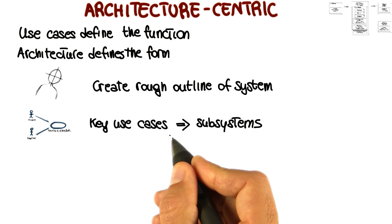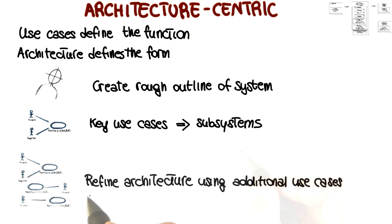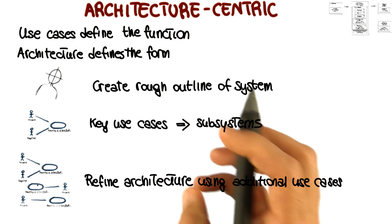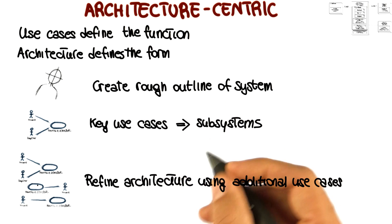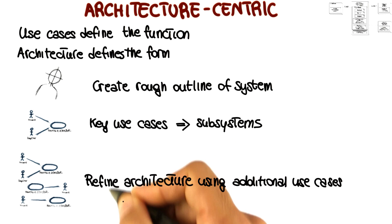So again, we use the key use cases to identify and define the key subsystems for my architecture. So once we have that, we keep refining the architecture by using additional use cases, considering more and more pieces of functionality that will help us refine the architecture of the system, and also leveraging our increasing understanding of the system that we're modeling. And this will continue until we are happy with the architecture that we define.